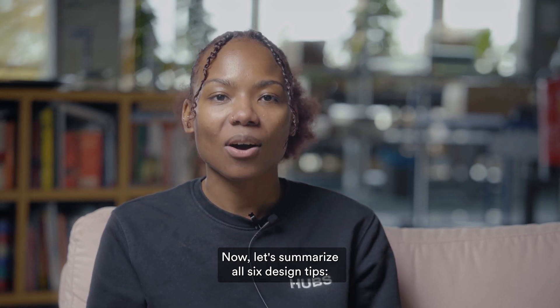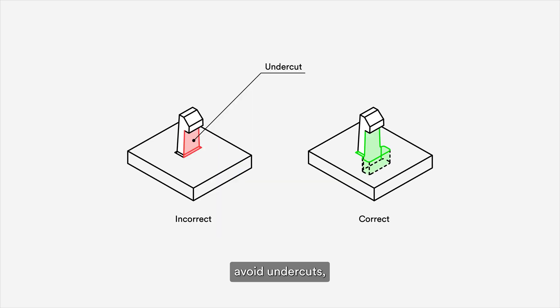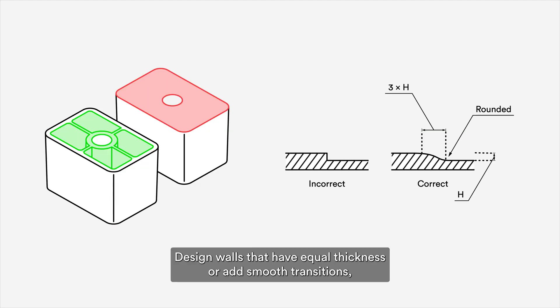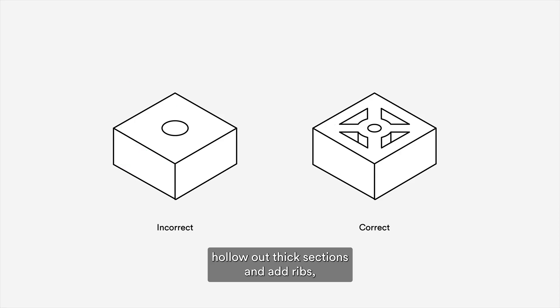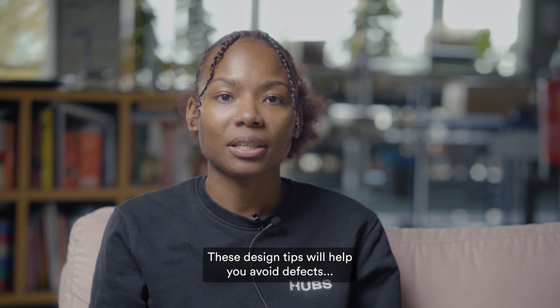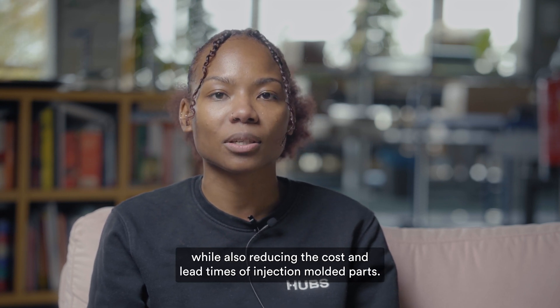Now, let's summarize all six design tips. Add draft angles. Avoid undercuts. Attach bosses, ribs, or sidewalls. Design walls that have equal thickness or add smooth transitions. Hollow out thick sections and add ribs. And round all edges. These design tips will help you avoid defects while also reducing the costs and lead times of injection molded parts.